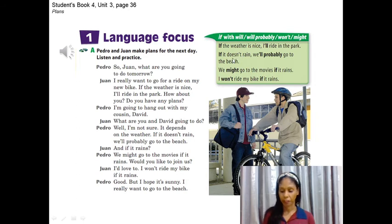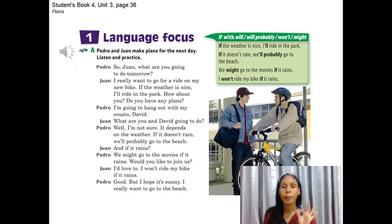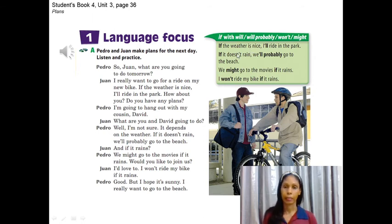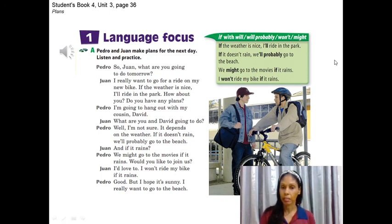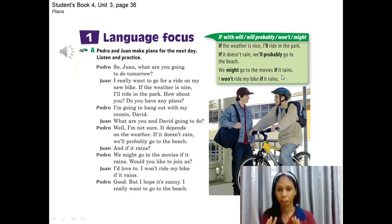The important detail of the first conditional: the part of the sentence with 'if' is always in the present tense, and the other part is always in the future — with will, might, or won't. For example: 'If the weather is nice' — present. 'If it doesn't rain' — 'doesn't' is a present auxiliary. The other clause is in the future: 'we will probably go' or 'we might go to the movies.' The 'if' clause is always present; the result clause is always future.